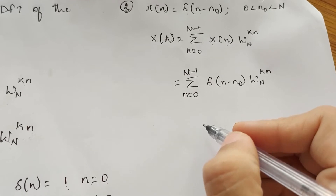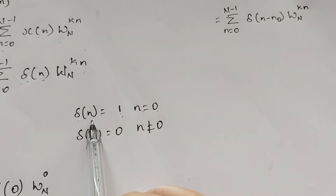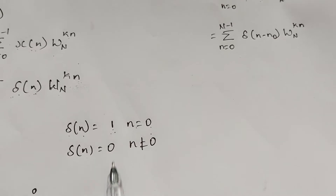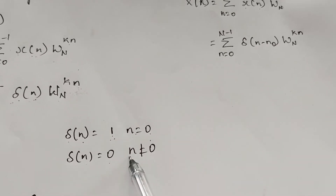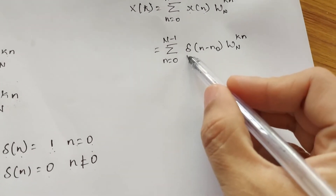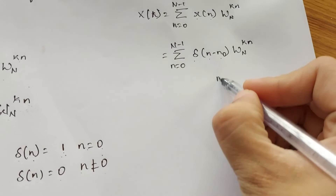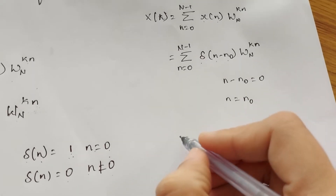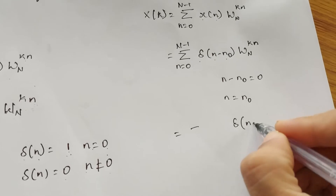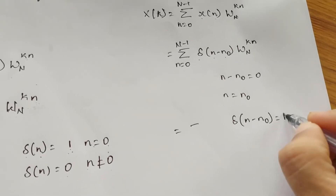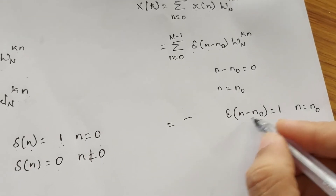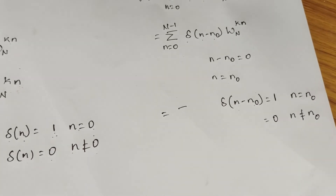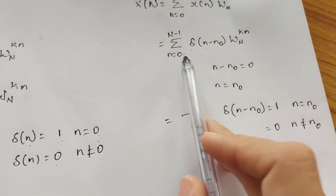As we have seen in the previous problem, δ(n) = 1 when n = 0, and δ(n) = 0 when n ≠ 0. In the same way, δ(n - n₀) = 1 when n - n₀ = 0, that is when n = n₀, and δ(n - n₀) = 0 when n ≠ n₀.